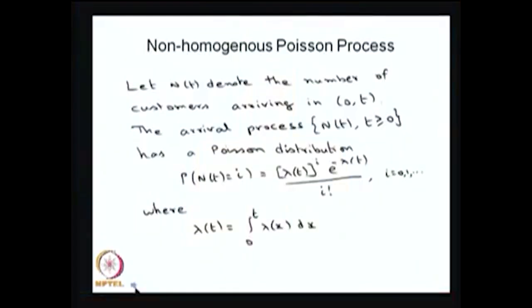Next I am going to give some more processes related to the Poisson process. The first one is the non-homogeneous Poisson process. Let n(t) denote the number of customers arriving in the interval 0 to t. The arrival process has a Poisson distribution, but here instead of the mean arrival rate being a constant lambda, the mean arrival rate is a function of t, where lambda(t) is the cumulative rate till time t.